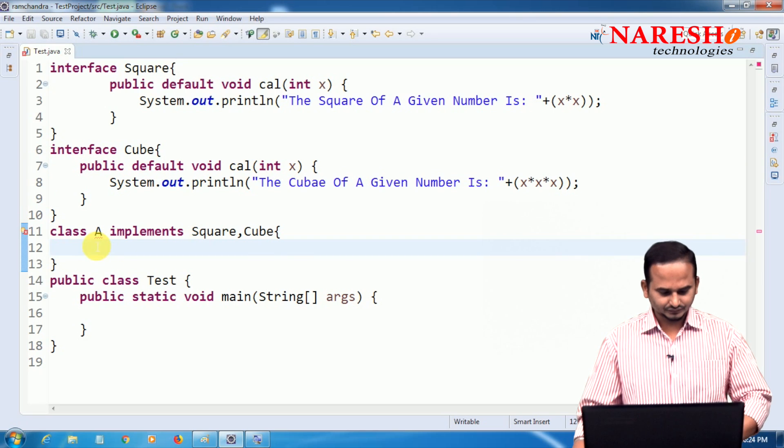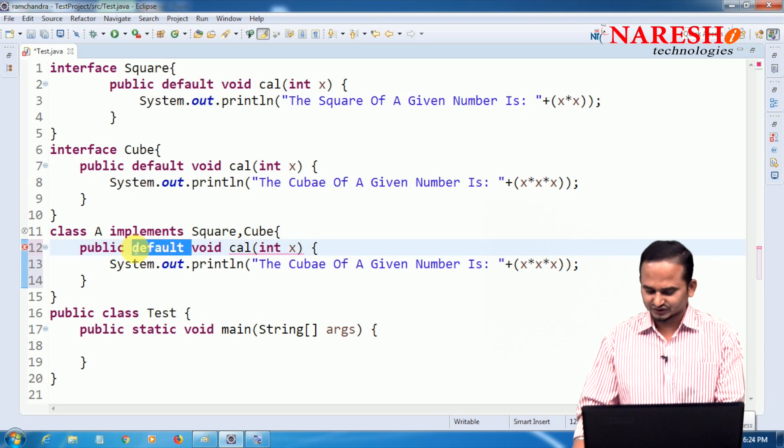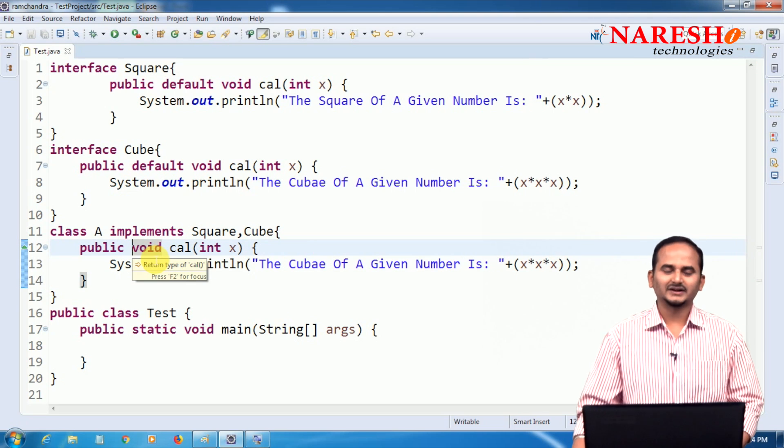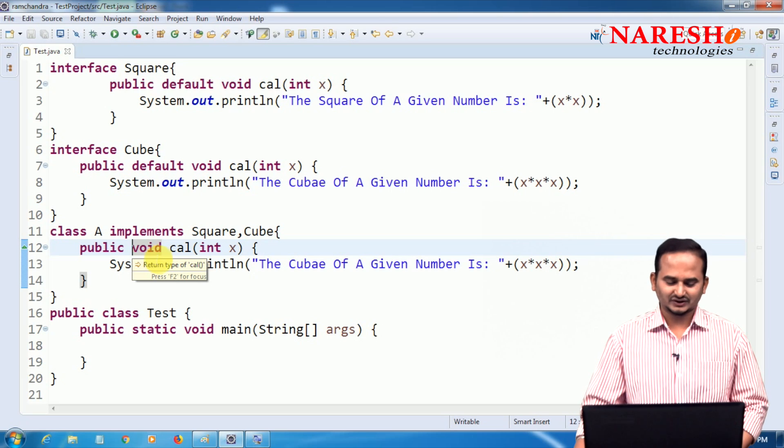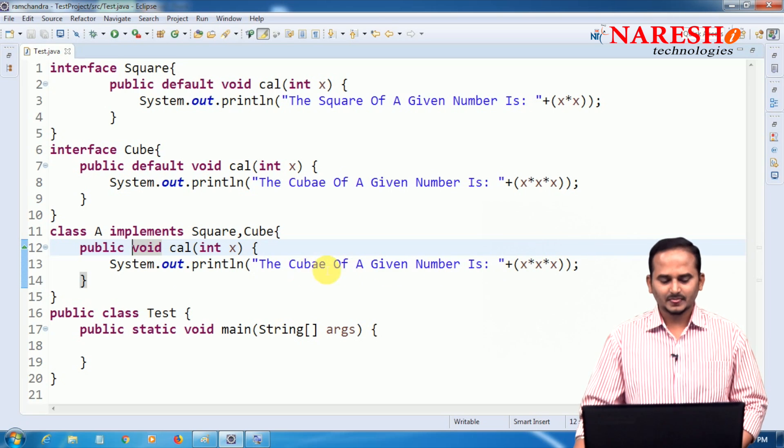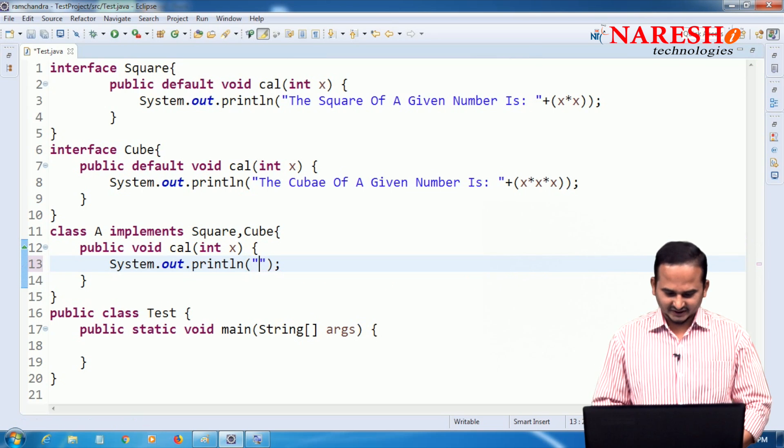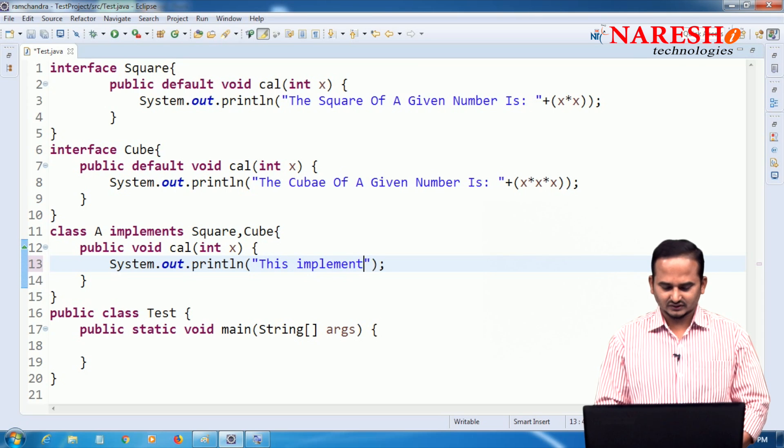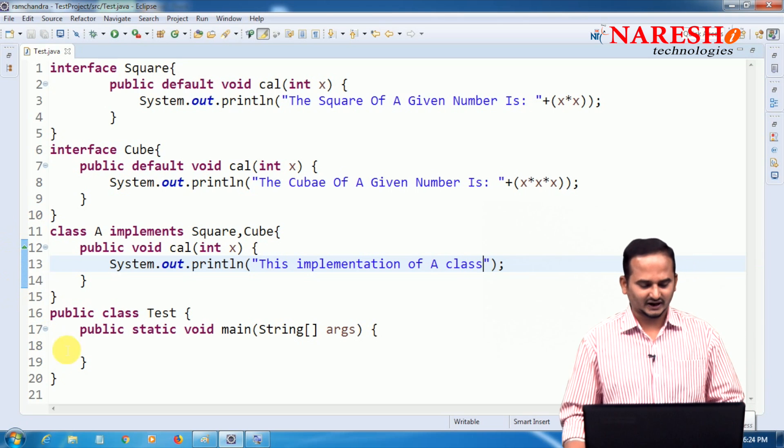Very simple by overriding the method, but don't use default here. The reason is default methods are not allowed in class as well as abstract class. Now simply I am giving one implementation. This is implementation of a class.